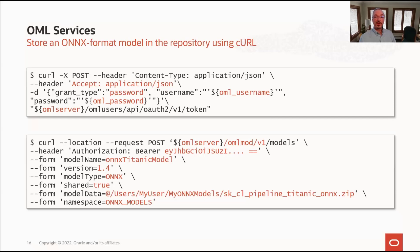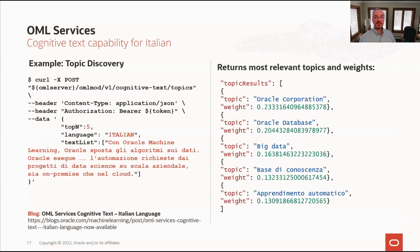Once stored, the model can be used for real-time scoring in applications and dashboards. OML Services now supports Italian for cognitive text analytics. Mark demonstrates using the REST API for topic discovery with the topics endpoint on Italian text, using the Postman interface — an API testing application with a graphical user interface acting as an HTTP client.